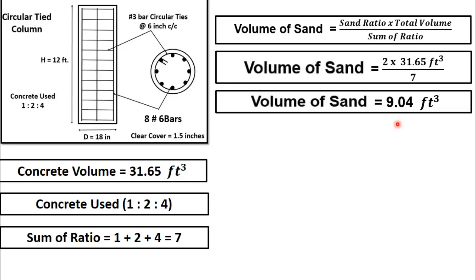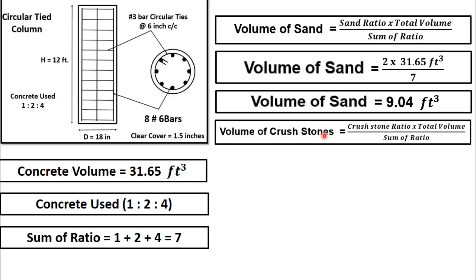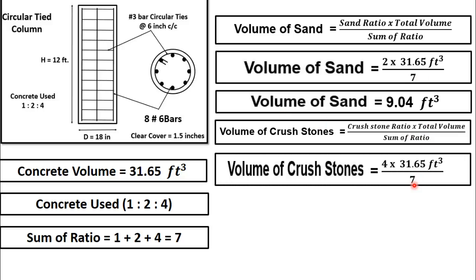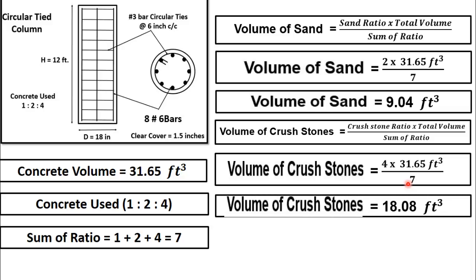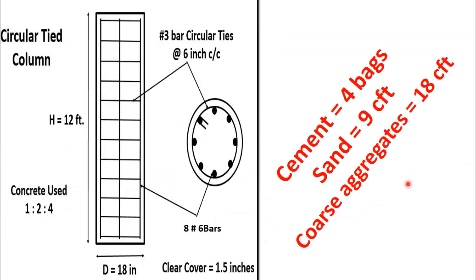Using the same method, we calculate the volume of coarse aggregate. Volume of coarse aggregate = (coarse aggregate ratio / sum ratio) × total volume. The ratio of coarse aggregate is 4, total volume is 31.65 cubic feet, and sum ratio is 7. After simple calculation, volume of coarse aggregate is 18.08 cubic feet. So the quantities of materials for concrete are: cement — 4 bags, sand — 9 cubic feet, and coarse aggregate — 18 cubic feet.